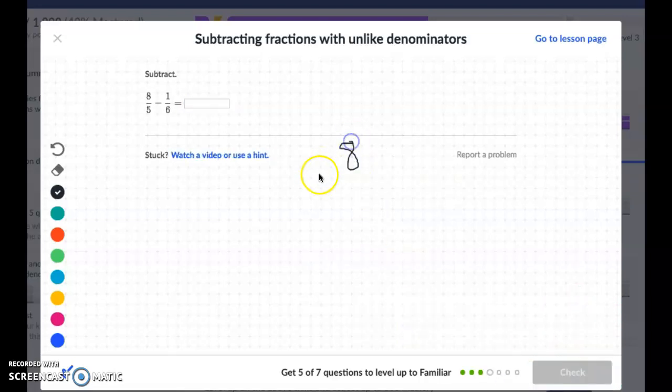Eight fifths minus one sixth. And in this case, I cannot change my smaller number into the bigger number, so I'm going to multiply my two denominators together and make it 30 and 30. So I've got my denominator, which is great. Now I've got to change my numerators too.